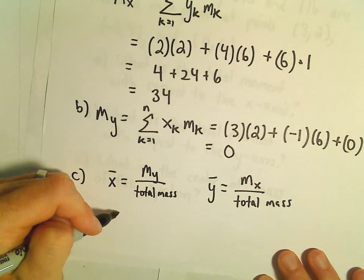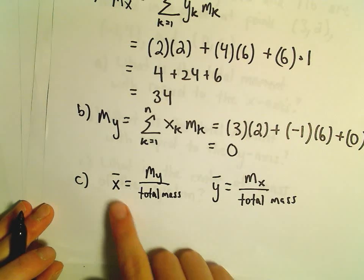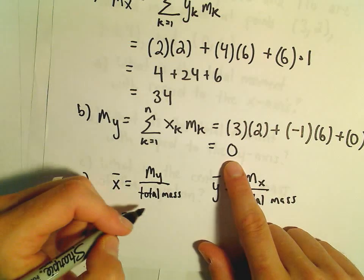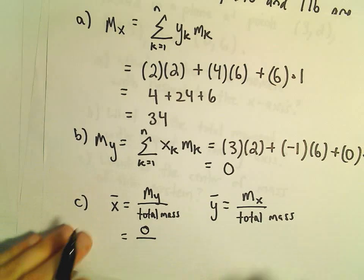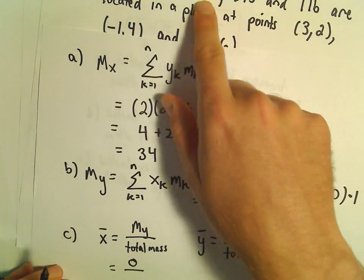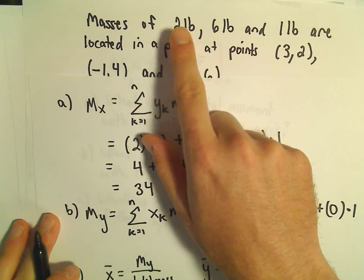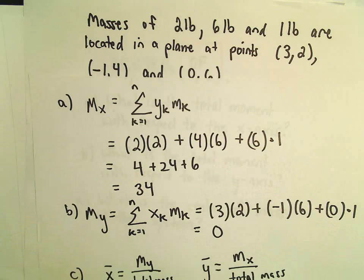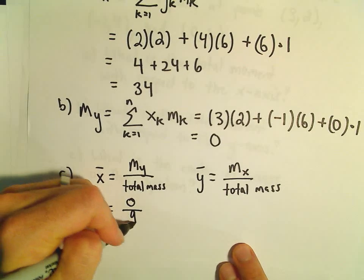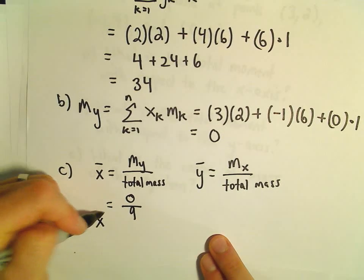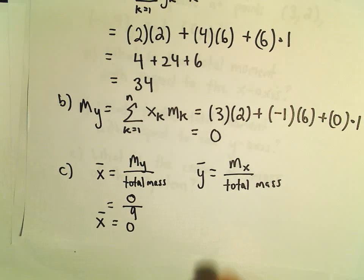Well, we've already computed most of these things. So the moment about the y-axis, we said that had value 0. Let's go ahead and calculate the total mass. So 2 plus 6 is 8, plus 1 is 9. So x-bar would have a value of 0.